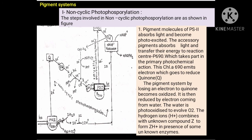Now we will see non-cyclic photophosphorylation. The steps are as shown in the figure. In the first step, the pigment molecules of photosystem second absorb light and become photo-excited. The accessory pigments absorb light and transfer their energy to the reaction center P690, which takes part in the primary photochemical action. Chlorophyll A 690 emits an electron which goes to reduce the quinone. The pigment system, by losing an electron to quinone, becomes oxidized. It is then reduced by electrons coming from water. Water is photo-oxidized to evolve oxygen. The hydrogen ions combine with an unknown compound Z to form ZH+ ions in the presence of some unknown enzymes.